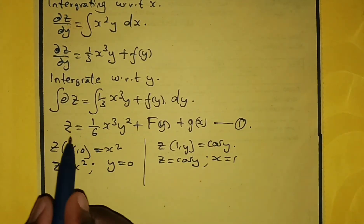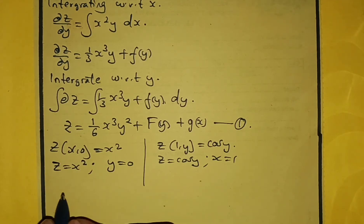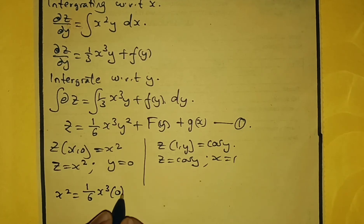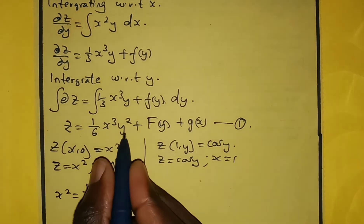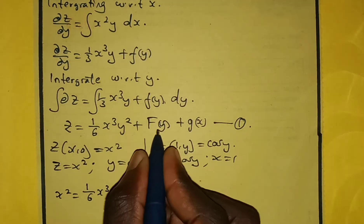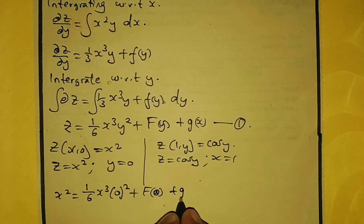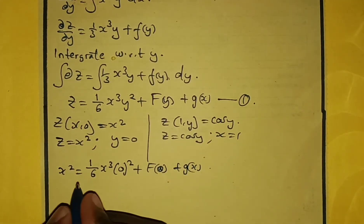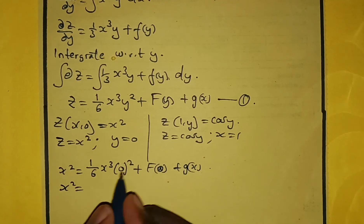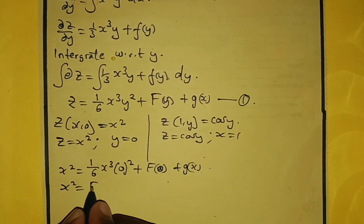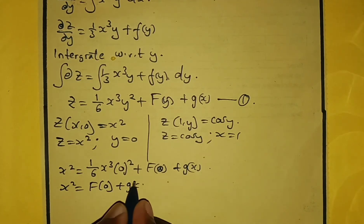With z = x² and y = 0, substituting into equation 1: x² = (1/6)x³ · 0² + F(0) + g(x). This simplifies to x² = F(0) + g(x), since the first term is zero.